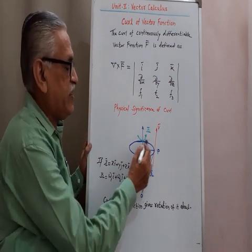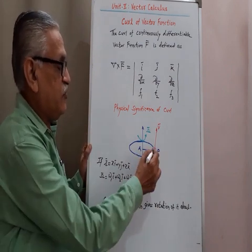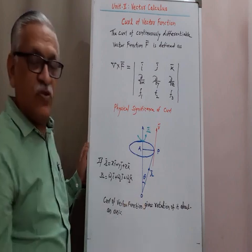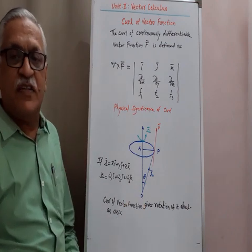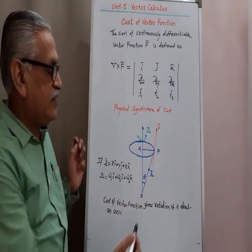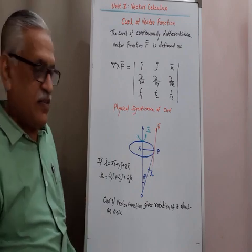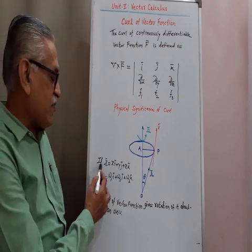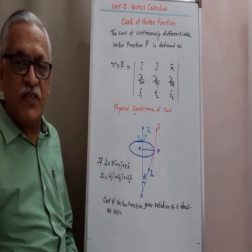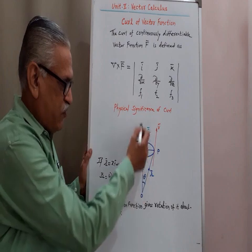Consider a point P on a surface. If we join that point P with origin O, we get its position vector OP, where R-bar is equal to xi plus yj plus zk.